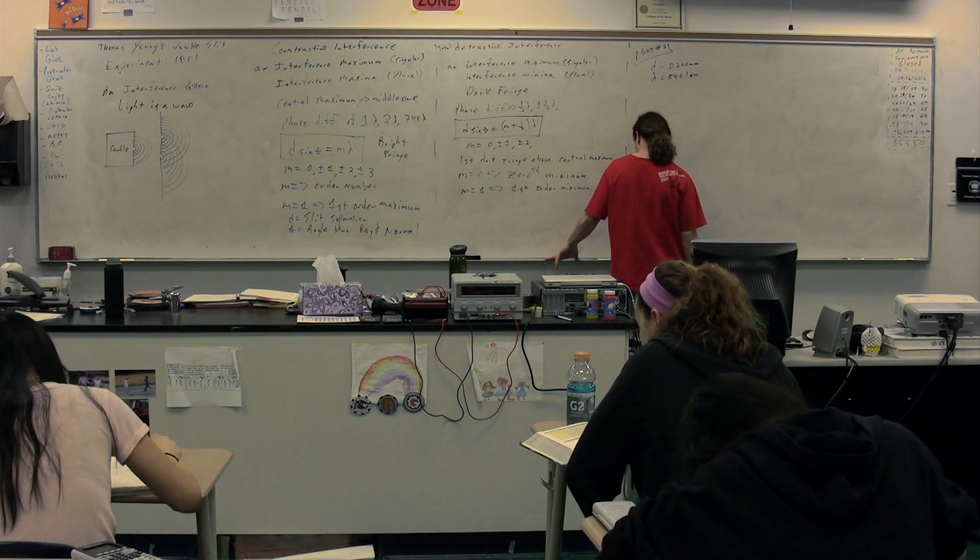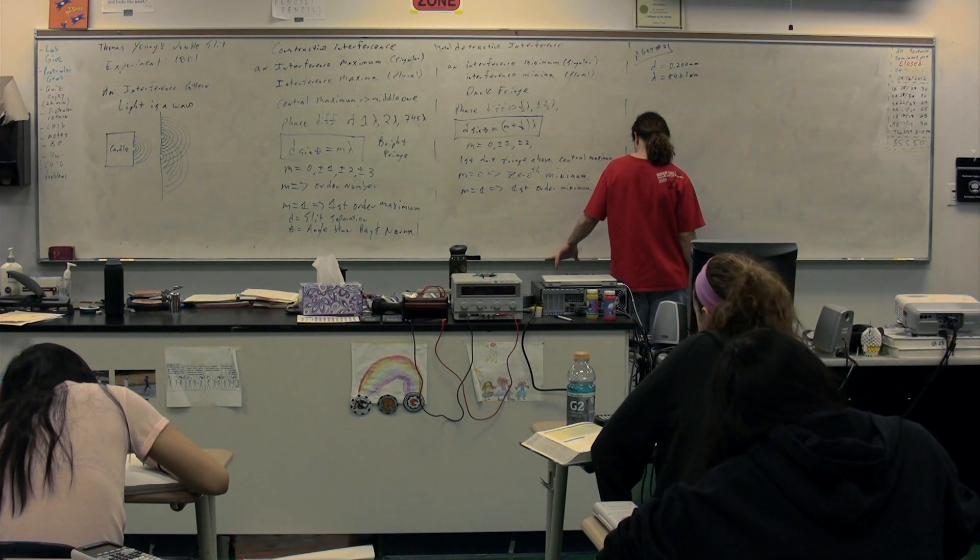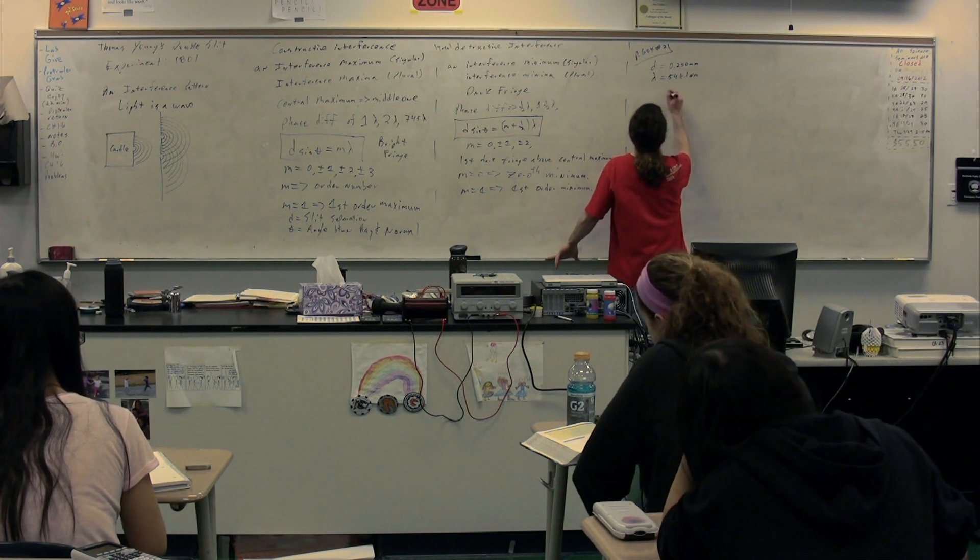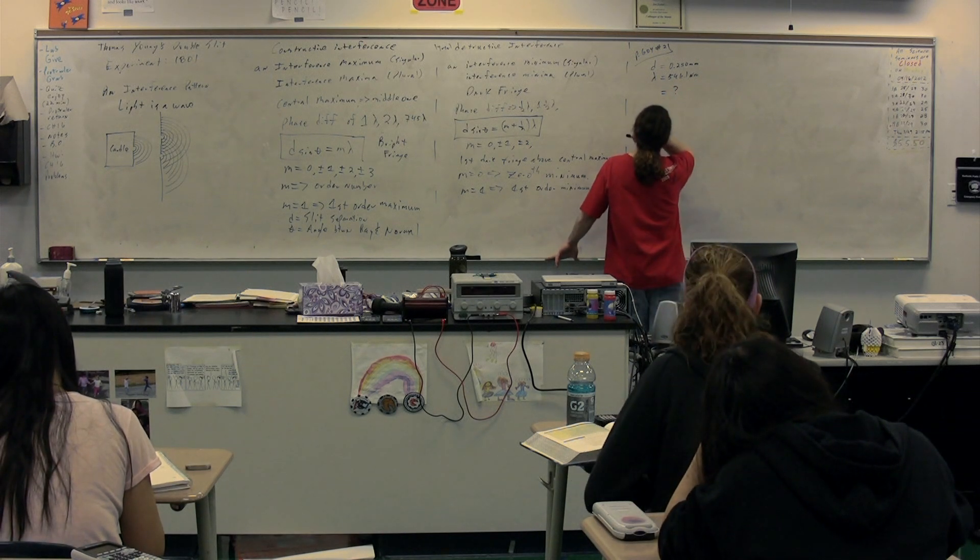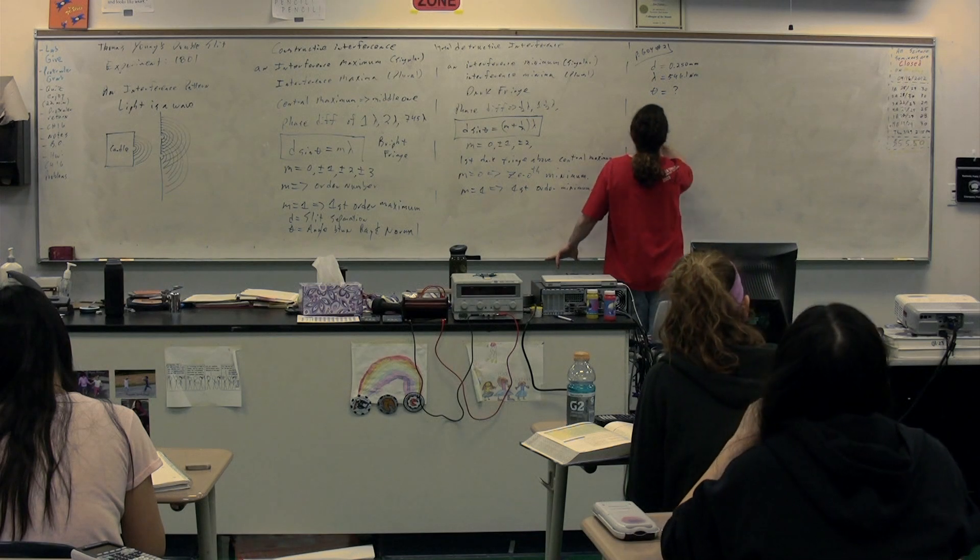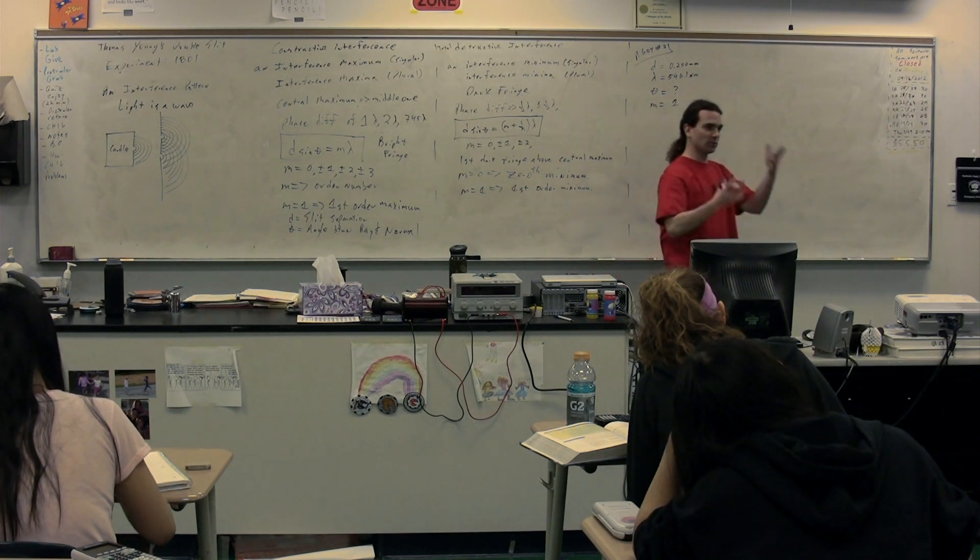Calculate the angle from the central maximum to the first bright fringe on either side of the central maximum. So we're looking for theta where m equals plus or minus 1. Usually we just talk about the positive side because we don't need to talk about both sides.